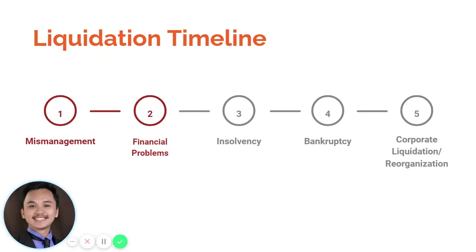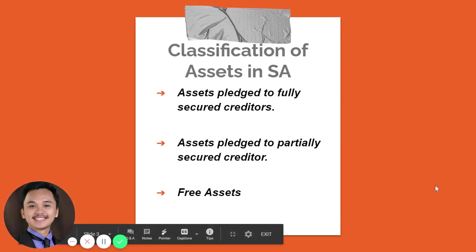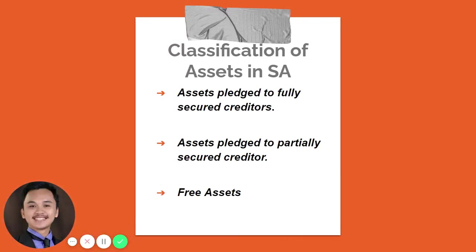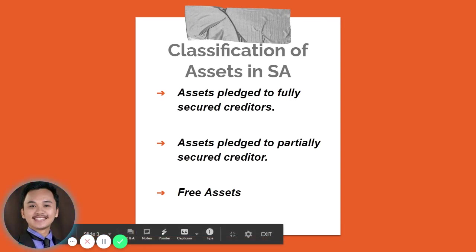Our focus in this discussion is: after bankruptcy, if the decision of the corporate board of directors is to liquidate the corporation, what procedures do we undertake? When we talk about corporate liquidation, there are two important documents to prepare as an accountant: first is the Statement of Affairs, and the second is the Statement of Realization and Liquidation. Under the Statement of Affairs, assets and liabilities will be grouped depending on their nature.